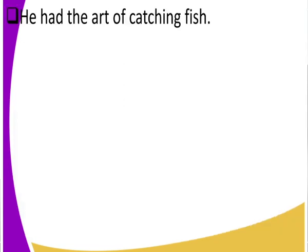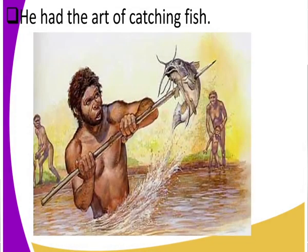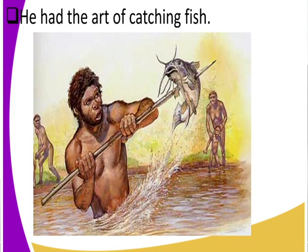How did Homo Sapiens Sapiens obtain his food? He had the art of catching fish — so he was a fisherman. His hunting skills also improved. Compared to early man, the Homo Sapiens Sapiens had better skills and better techniques of hunting. As you can see, he is using a spear to hunt — or rather using a spear to fish.